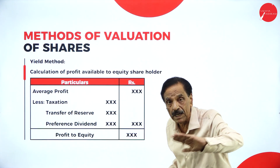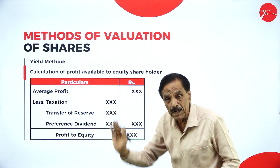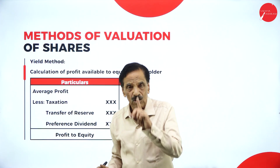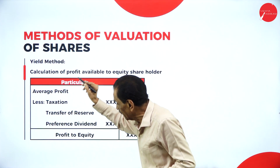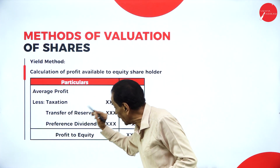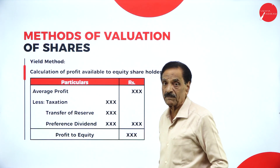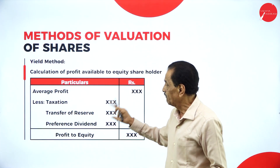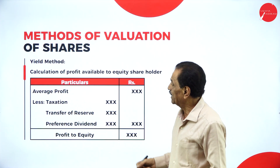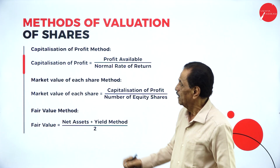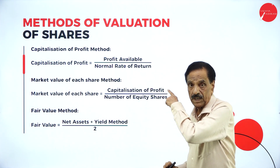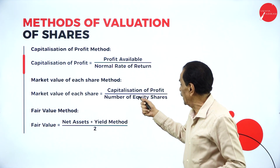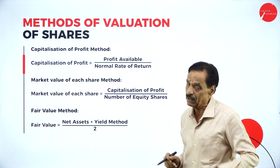Under the yield method, first calculate average profit: total profit divided by number of years. If five years' profit is given, add all five years and divide by five. From the average profit, deduct taxation, transfer to reserve, and preference share dividend. The remaining profit is available to equity shareholders. Then capitalize this profit: capitalized value equals profit available divided by normal rate of return multiplied by 100. Market value per share equals capitalized profit divided by number of equity shares.